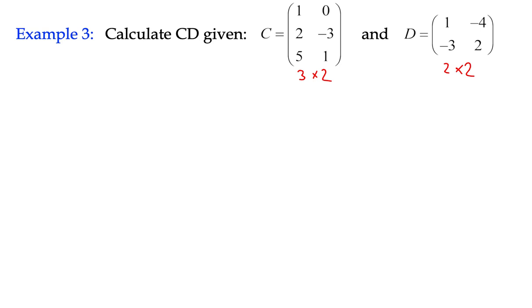They're conformable because we can see that 2 and 2, the two inside terms are the same. And we know that our answer is going to be a 3 by 2 matrix. We'll just check that that actually is the case. 3 by 2 is going to be our answer. That means there's going to be 6 elements in our final matrix.